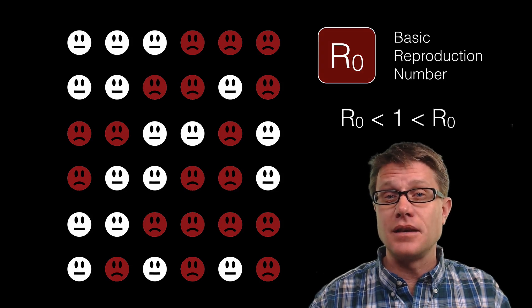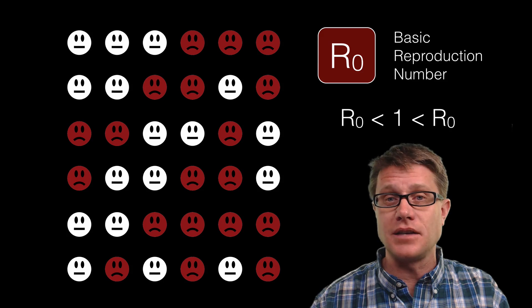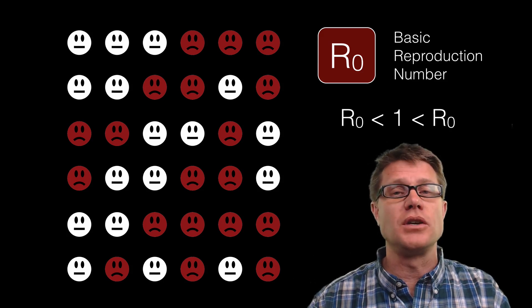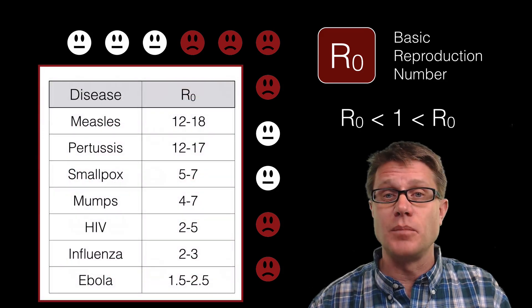If R naught is ever less than 1, in other words you can infect at least one other person, then the disease dies out. But if you have ever heard of a disease that means its R naught value is going to be greater than 1. And so here are some R naught values for some diseases you might be familiar with.